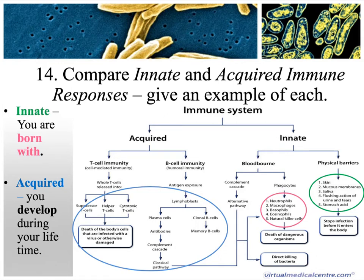Innate means born with; acquired means you gained it during your lifetime. You are born with all your physical barriers, mucous membranes, saliva — all of the first and second lines of defense — those are innate. You acquire B cells and T cells: you're not born with all your suppressor, helper, and cytotoxic T cells. You gain immunocompetence by being exposed to a specific antigen, which creates the paratope that matches it, giving you acquired immunity.